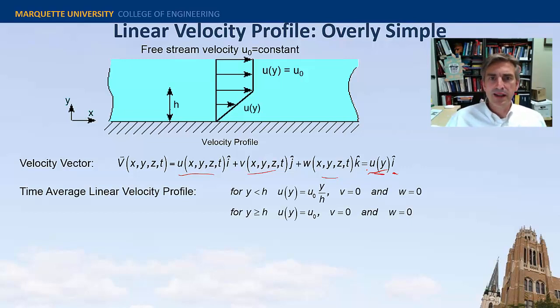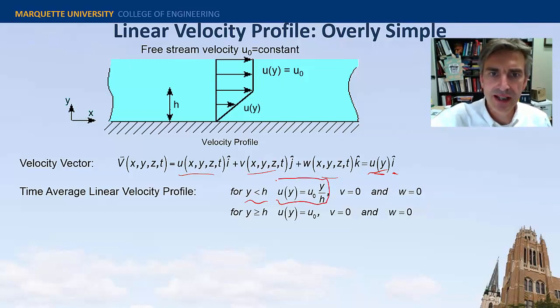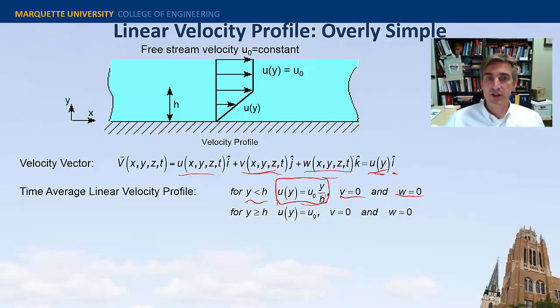More formally, I would write the velocity vector like this: below y equals h, the velocity is linear, so you can see that it's y over h. If y is zero the velocity is zero - it adheres to the no-slip. As y goes to h the ratio becomes one and you just get the constant free stream velocity. We're assuming that the velocities in the y and z direction are zero. Above the boundary layer height the velocity is just constant.